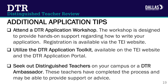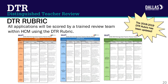Additionally, teachers may consider: 1. Attending a DTR application workshop. The workshop is designed to provide hands-on support regarding how to write the DTR application. Utilize the DTR application toolkit available on the TEI website and the DTR application portal. Seek out distinguished teachers on campus or DTR ambassadors. These teachers have completed the process and may be able to provide support or advice. Experiences are scored using the DTR rubric. Remember, the 2018-2019 DTR rubric has been updated. The DTR rubric is discussed in more detail during the DTR application workshop. Teachers are strongly encouraged to review the DTR rubric prior to completing the application.